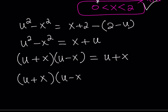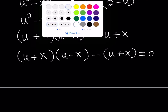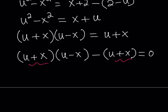Subtracting (u plus x) from both sides and setting equal to zero, we get (u plus x)(u minus x) minus (u plus x) equals 0. Factoring out (u plus x): we get (u plus x)(u minus x minus 1) equals 0.